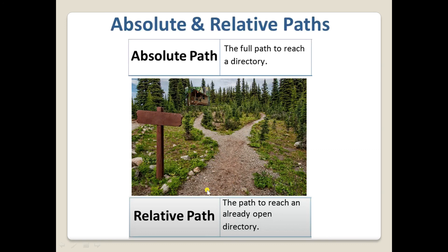To explain with an analogy: if you and a friend are standing far from his home for the first time, he needs to give you the full address — that's absolute path. But if you're already nearby, he'll give you directions from where you're standing — like 'take a U-turn, the dead end on the left is my home' — that's relative path. Absolute path is the complete address, like a full street address; relative path is directions from your current location.